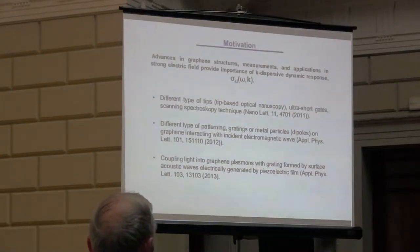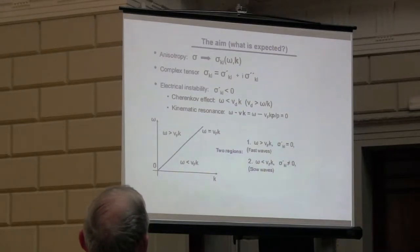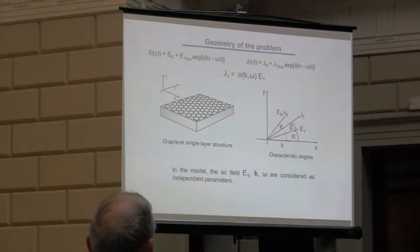These gradients are formed by surface acoustic waves, which are electrically generated by piezoelectric film. The common feature in all these examples is that there is a characteristic feature size that is translated into the k-dispersion of the dynamic conductivity. Here on the left, you can see the graphene single layer on the substrate and the coordinate system.